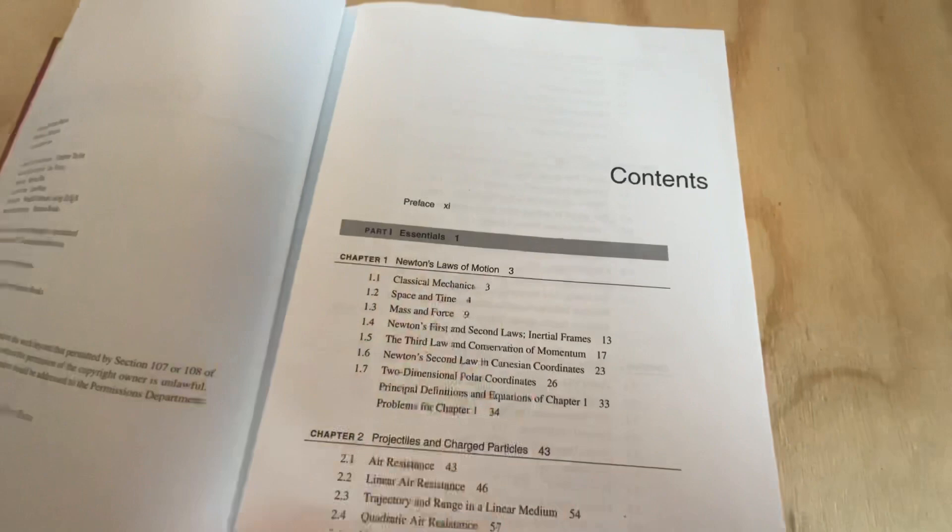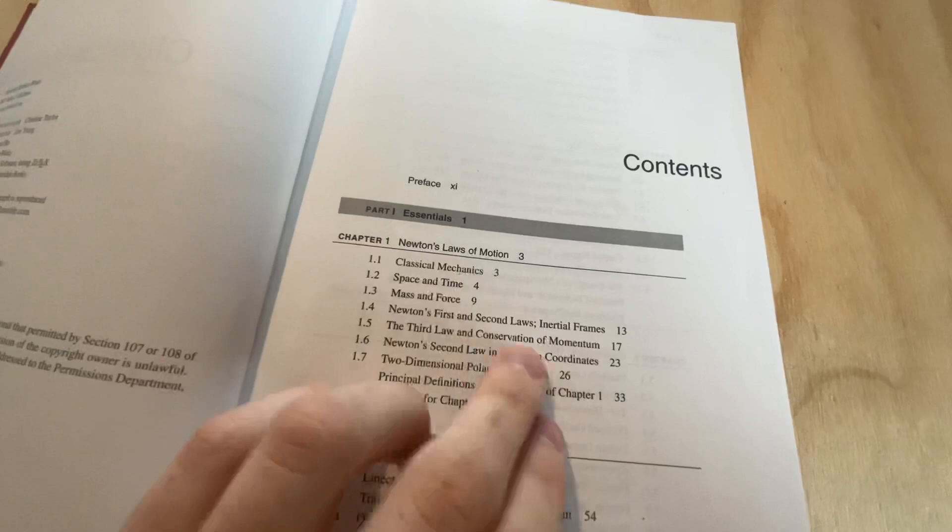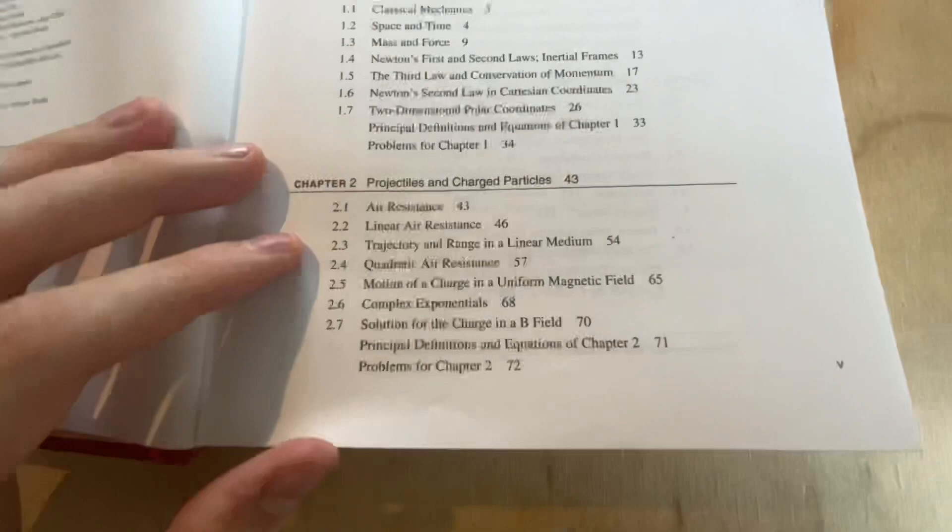Okay, so a table of contents. So he starts out by discussing Newton's Laws of Motion. This is very elementary and it just briefly discusses it, just talks about space and time, mass and force, and just some conversions to different coordinate systems, like polar coordinates.